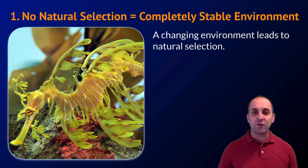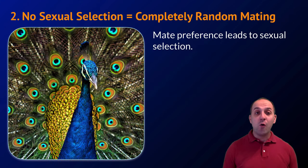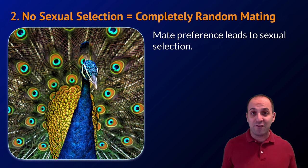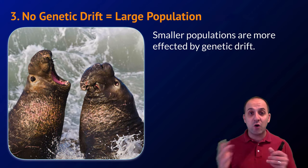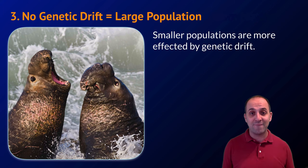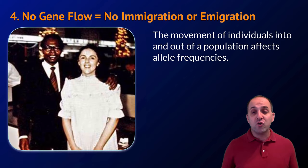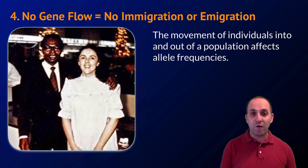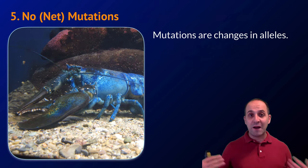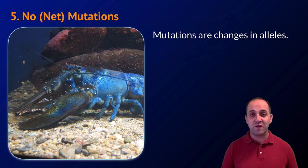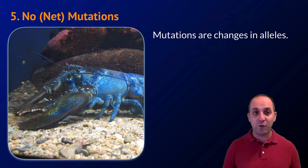A Hardy-Weinberg equilibrium population would require: no natural selection (the environment never changes), no sexual selection (mates have no preference — totally random mating), no genetic drift (so the population must be large), no gene flow (no immigration or emigration affecting allele frequencies), and no mutations (since mutations are spontaneous changes in DNA that affect allele frequencies).